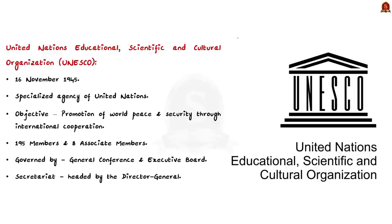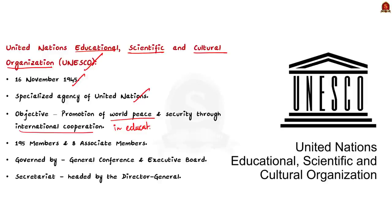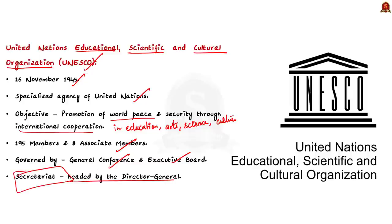Before knowing about World Heritage Sites, you should know about UNESCO. UNESCO stands for United Nations Educational, Scientific and Cultural Organization. It was born on 16th November 1945 and is a specialized agency of the United Nations. Its main objective is to promote world peace and security through international cooperation in education, arts, science, and culture. UNESCO has 195 members and 8 associate members, and it is governed by the General Conference and the Executive Board. The Secretariat of UNESCO is headed by the Director General and implements the decisions of the General Conference and the Executive Board.